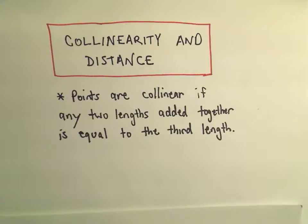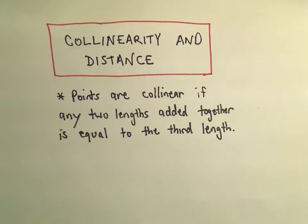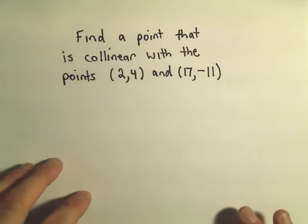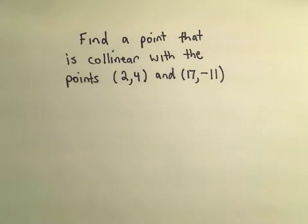If you saw the other video justifying that three points were collinear, it's kind of tedious because we had to find the distance between all three and show that the two smaller ones add up to the longer one. This one's actually going to be a little more simple.